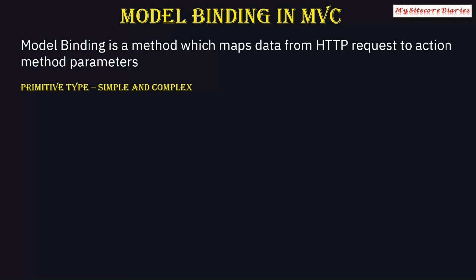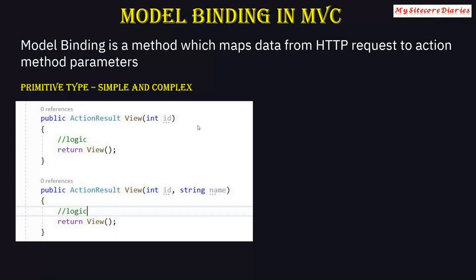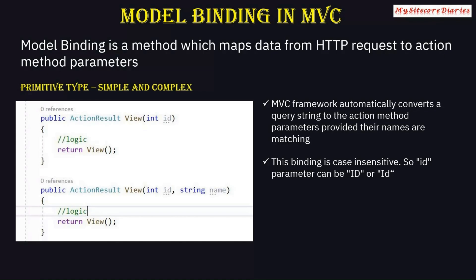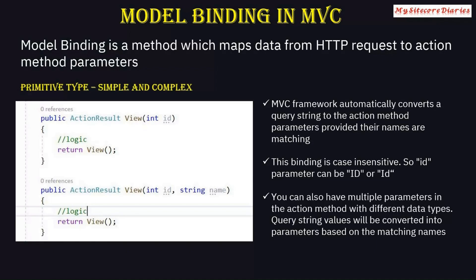Simple and complex type data will get added. For example, you have an ActionResult view method. The MVC framework automatically converts a query string to the action method parameters based on matching names. The binding is case-insensitive, so a lowercase 'id' and an uppercase 'ID' will both be considered. You can also have multiple parameters in the action method with different data types, and query string values will be converted into parameters based on matching names.